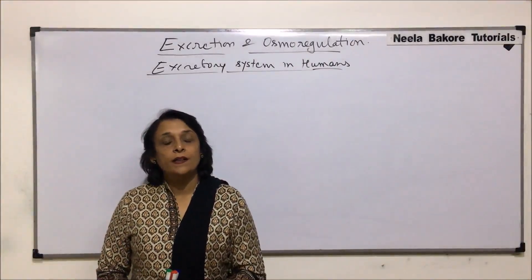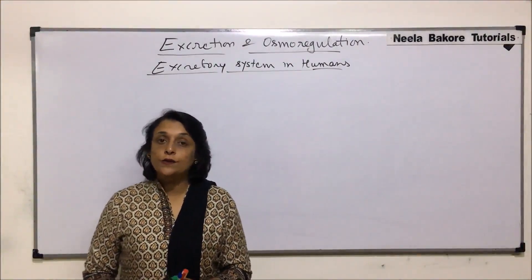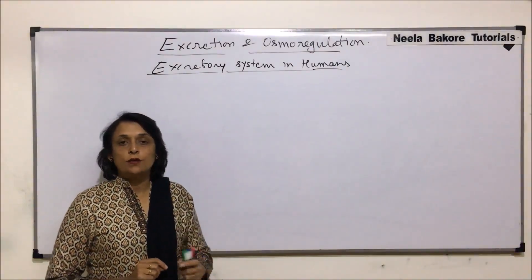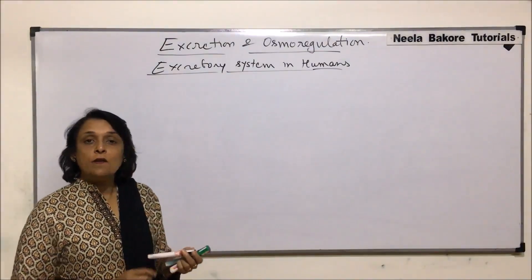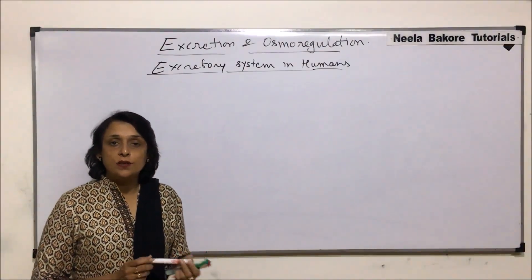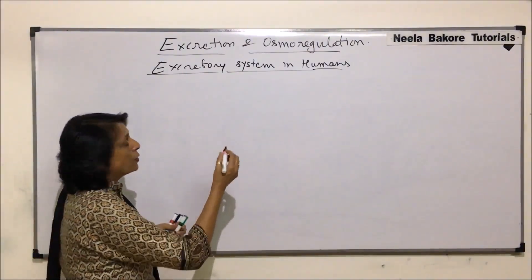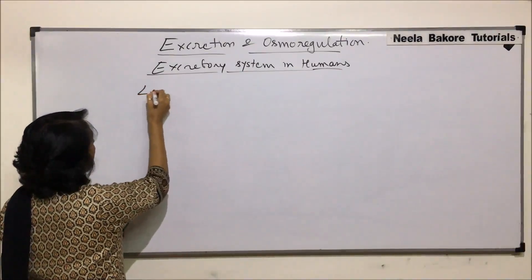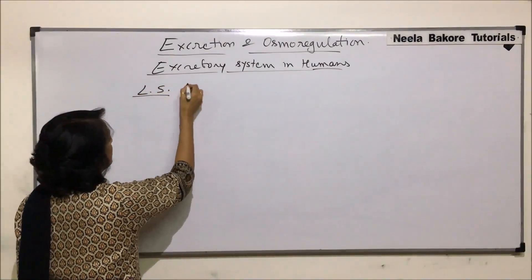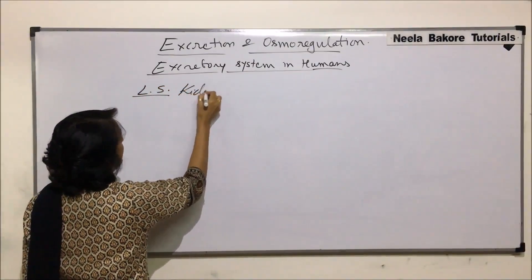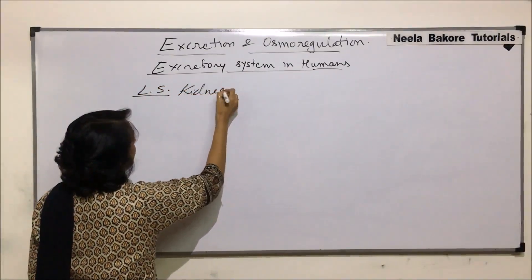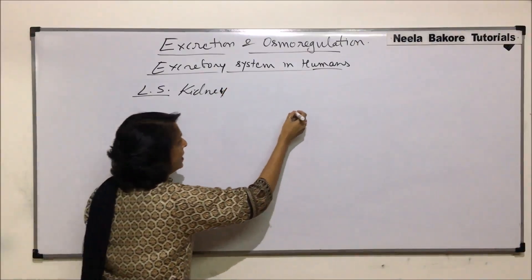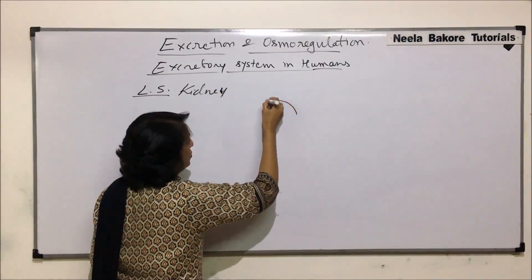We will now take up the internal structure of the kidney. The external structure, the location — everything we have seen. So now when we take a longitudinal section of the kidney, what all things are visible? This is what we are talking about — the LS, longitudinal section of the kidney.